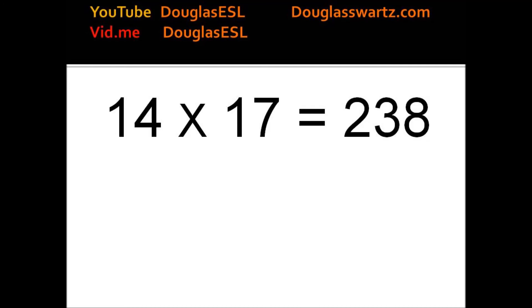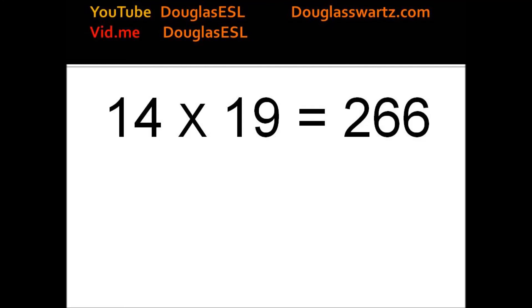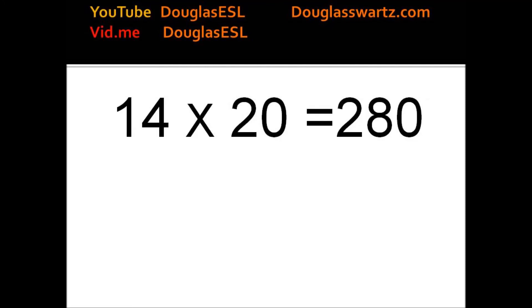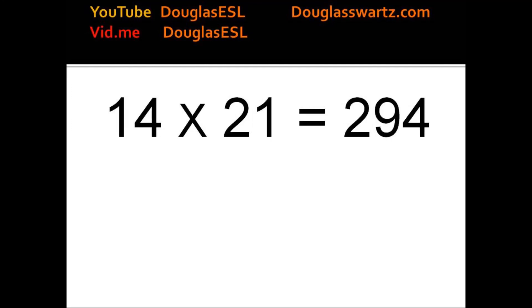14 times 17 equals 238. 14 times 18 equals 252. 14 times 19 equals 266. 14 times 20 equals 280. 14 times 21 equals 294.